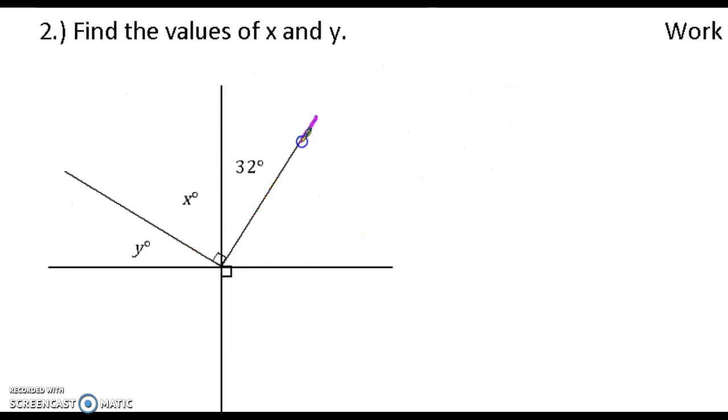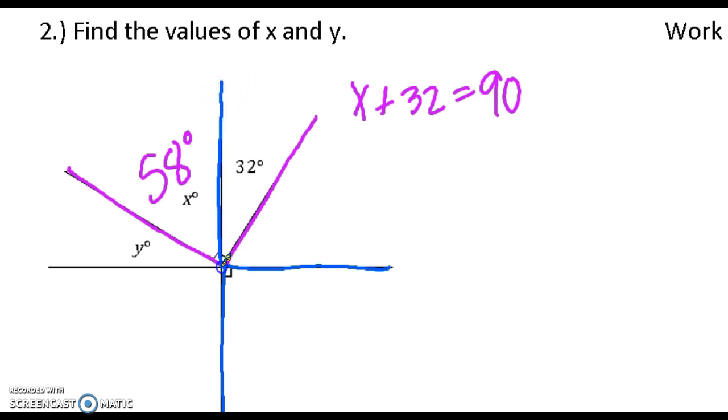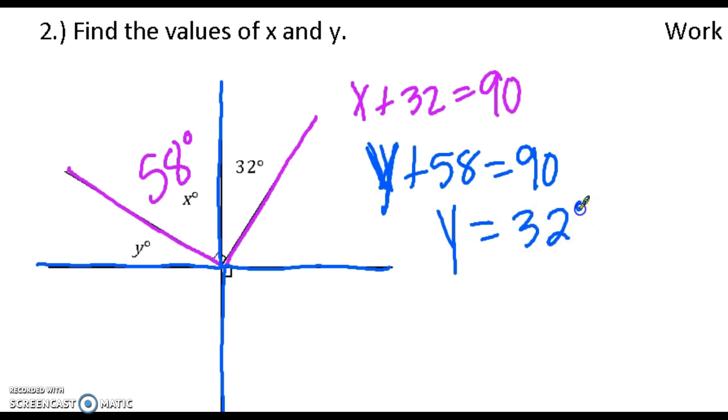All right, this angle we know is 90 degrees. These two angles are complementary because of this right angle, so x plus 32 equals 90. I'm going to take the 32 away from the 90 to see that x is 58. Now this 90-degree angle is vertical with x and y, so x and y are complementary. When you add them together, they will also equal 90. Y plus 58 equals 90, so y is 32 degrees.